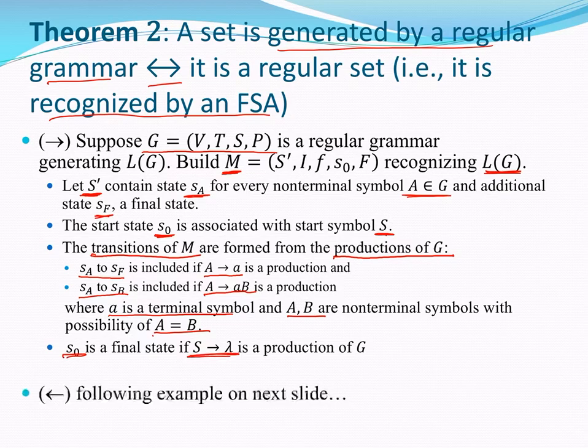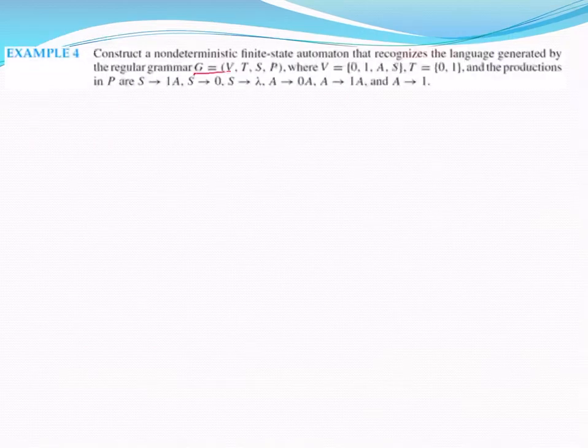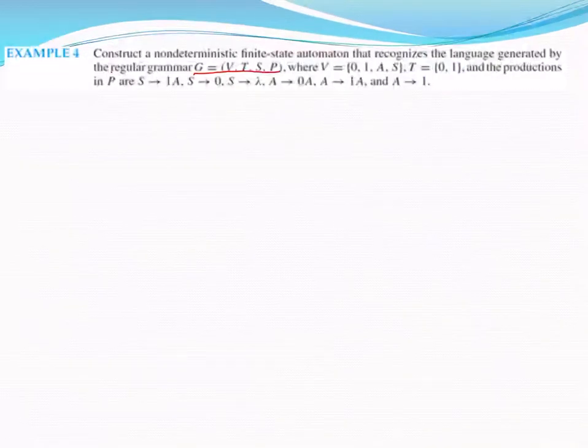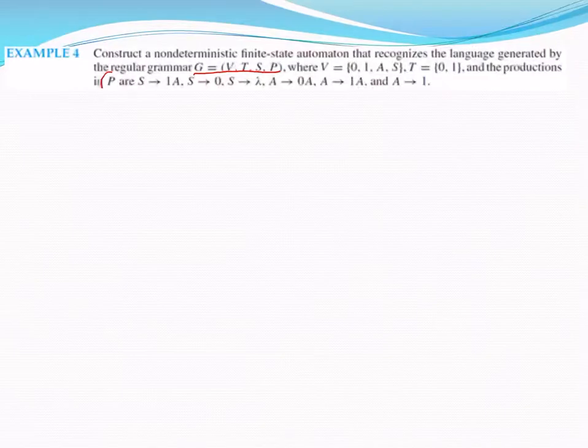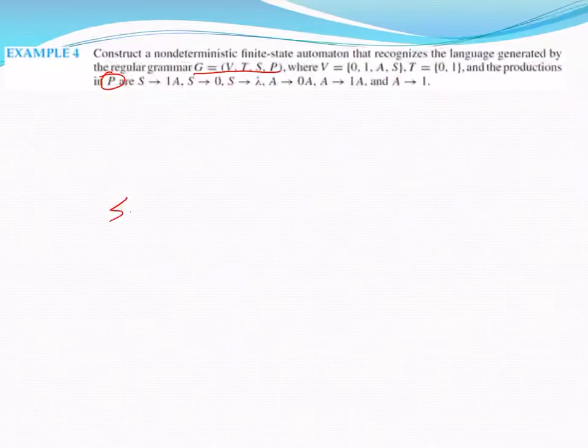Let's do an example. This one comes from the book, example four from the textbook. I want to create a machine that recognizes the language generated by this grammar, where I have these production rules. Remember, I start with a state 0 that is associated with my starting state.